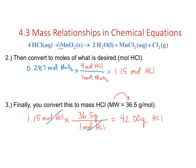That is the amount needed for this reaction based on 25 grams of manganese oxide. Starting with two significant figures in 25 grams of manganese oxide, we report the final answer to four significant figures: 42.00 grams of HCl needed in this reaction.